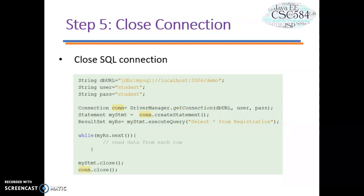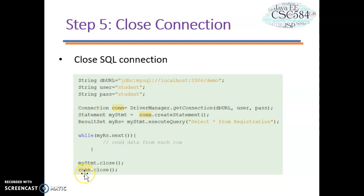Finally, step five: close the connection. By closing the connection object, the statement and result set will be closed automatically. The close() method of the Connection interface is used to close the connection. After fetching and displaying your data, you need to close myStatement from the Statement class, and then close the connection object that opened the connection to the database.